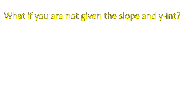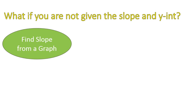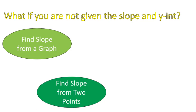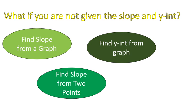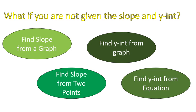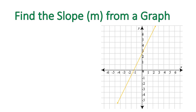If you are not given the slope and the y-intercept, you are going to have to find the slope. So I'm going to show you how to find the slope if you're given a graph. I'll show you how to find the slope if you're given just two points. I'll show you how to find the y-intercept from a graph, and also how to find the y-intercept from an equation. So we're going to talk about all four of these things, and then we're going to come back to that y equals mx plus b equation.